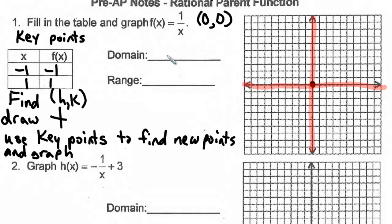Now let's plot our points from the h,k at 0, 0. We're going to graph out to the left 1 and down 1, and to the right 1 and up 1. These points are going to get very close to the red lines, but they will never cross. This is what the parent function looks like.